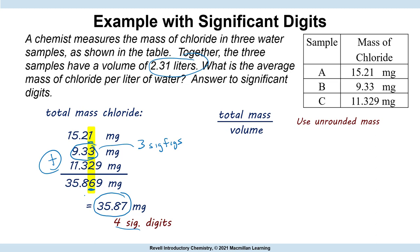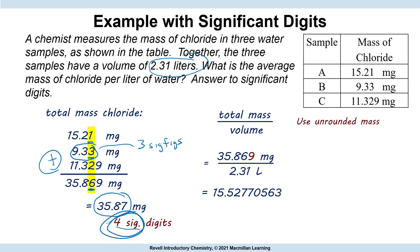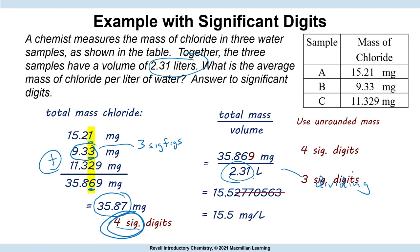Don't round that number — just keep the entire number in your calculator, which should be 35.869. Now divide by the volume. We're going to round to the correct number of significant figures. Is it four? No, because now we're dividing. We have to think about the rules for division: the least precise measurement in number of digits. 2.31 has three significant digits, so we carry three in our answer. The result is 15.5 milligrams per liter. Don't forget your units.